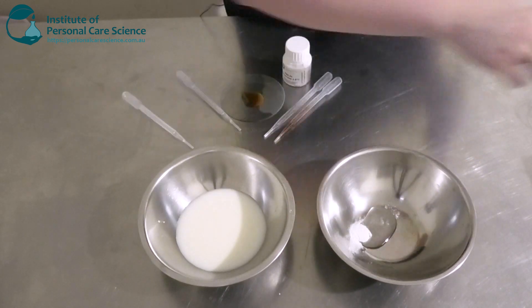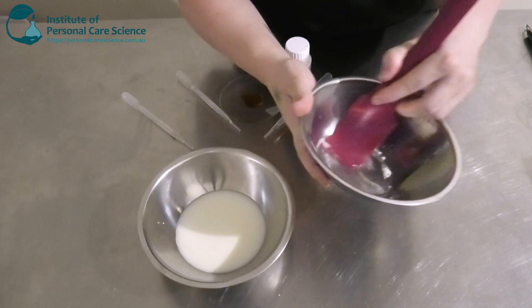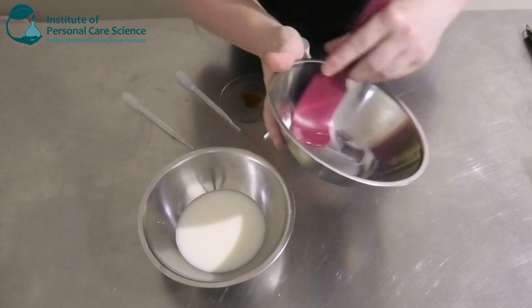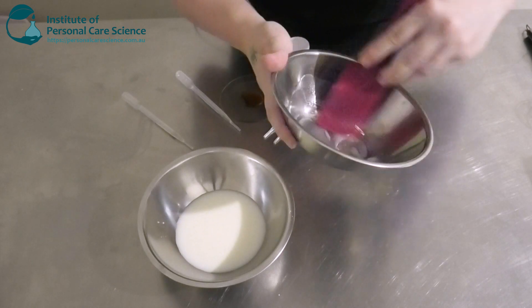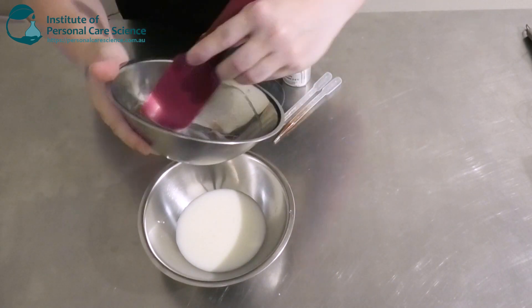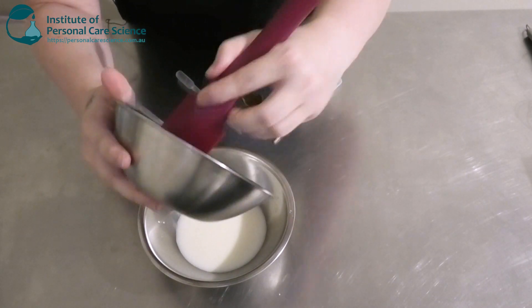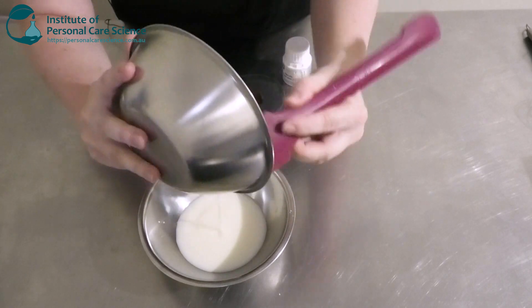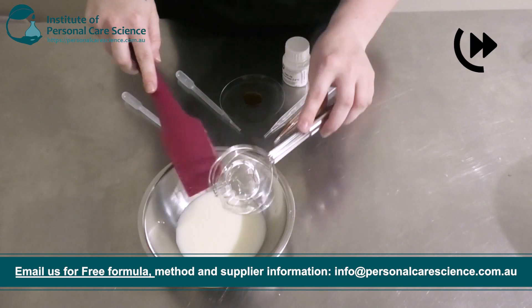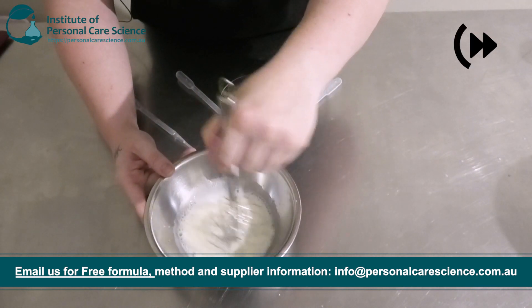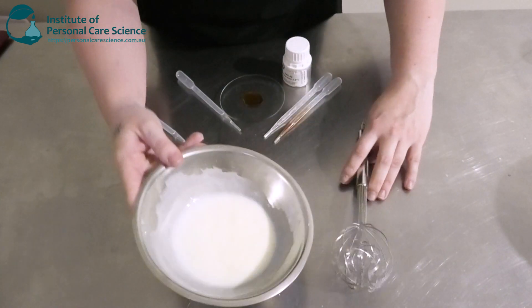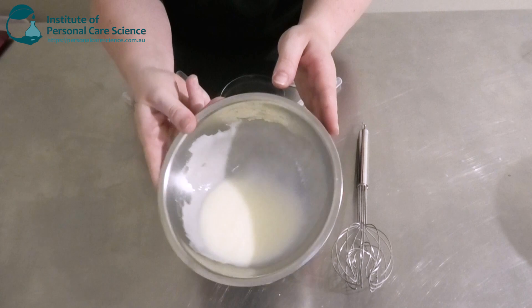So I'm going to slurry this in a bit of organic glycerin. And as I said before, the Verdescence range is natural so you can use it in natural or organic formulations. Okay, so once you have a nice smooth slurry, we're just going to add that into our water phase here. And as you can see, that's got a nice good serum viscosity there.